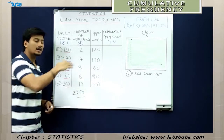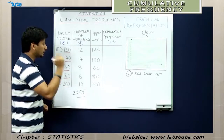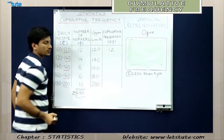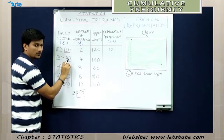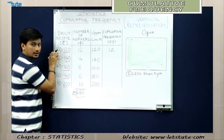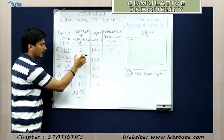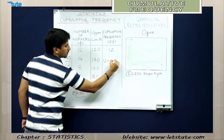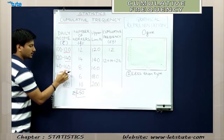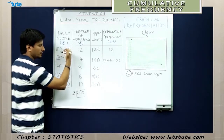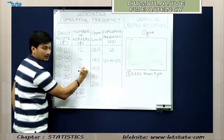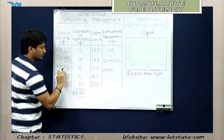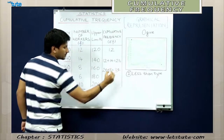Now let us calculate the cumulative frequency. The frequency up to 120 is 12, so the cumulative frequency for the first group is 12. To find the cumulative frequency up to 140, we add frequencies from 100 to 140: 12 plus 14 equals 26. The cumulative frequency up to 160 is everything from 100 to 160: 26 plus 8 equals 34. We similarly calculate for all remaining groups. Notice that the last cumulative frequency matches the total frequency.